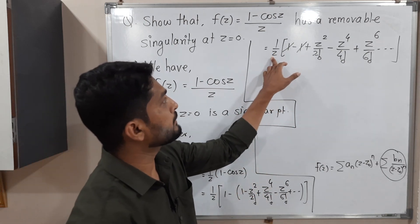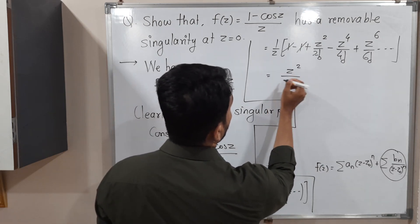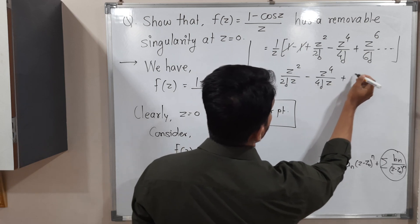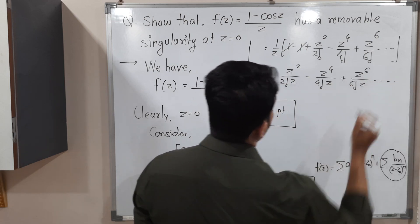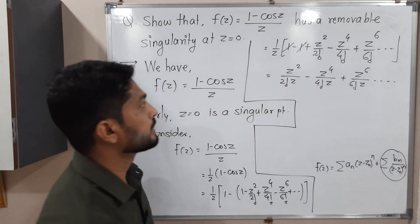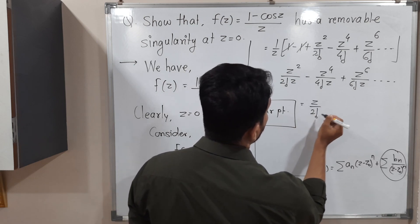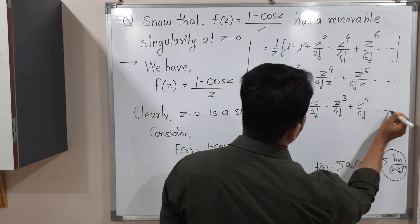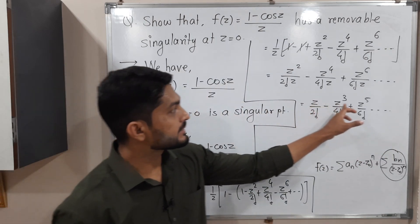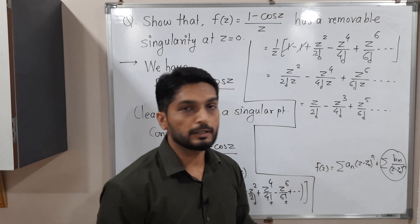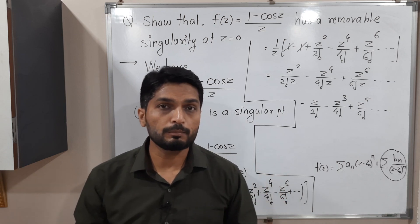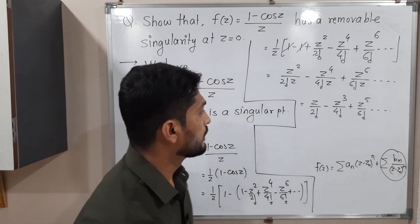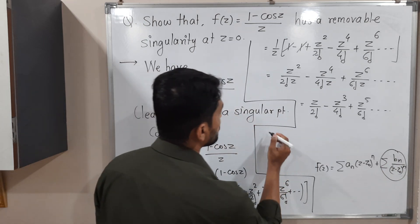Now I multiply each term by (1/z). So we get z²/(2! · z) - z⁴/(4! · z) + z⁶/(6! · z) - .... In each term, one factor of z cancels, giving: z/2! - z³/4! + z⁵/6! - .... This is the Laurent expansion. Notice that z appears in the numerator in every term — there is no term where z appears in the denominator. So there is no term in the principal part.